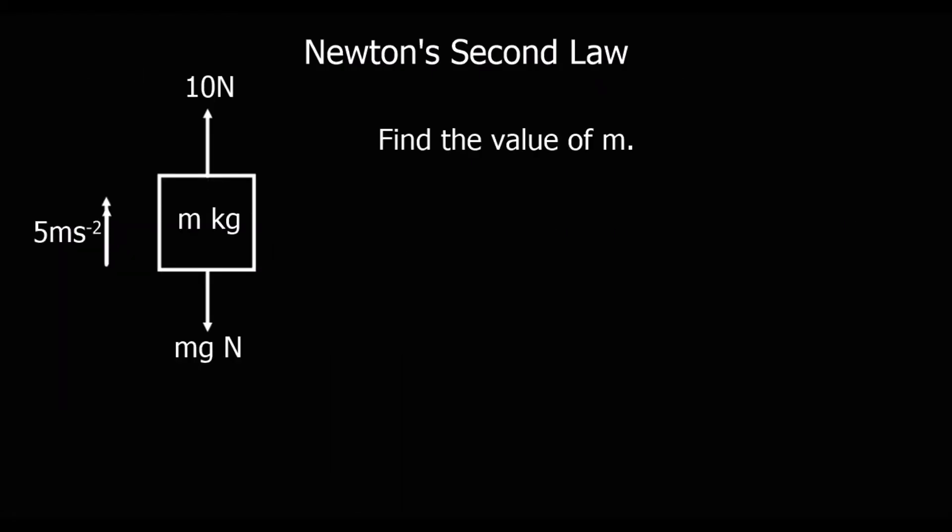Here's a question using F equals MA. F is the resultant force. If we've got our particle accelerating upward at 5 meters per second squared, F is the forces up minus the forces down. So 10 minus the weight MG equals MA, which is M times 5, or 5M.